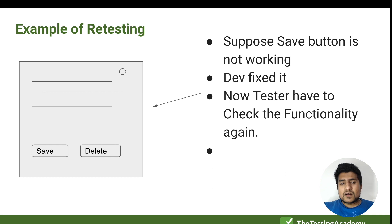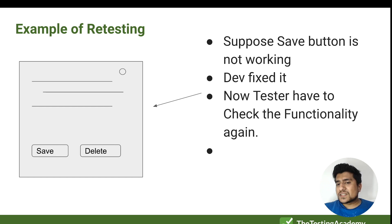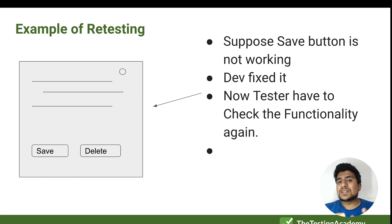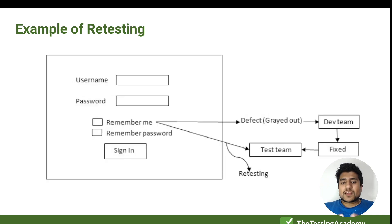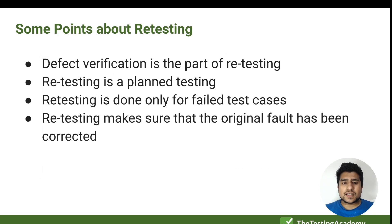Here is a simple example of retesting. Suppose you have a form with a save button and a delete button, and the save button is not working. Once it is fixed, the tester has to test only the save button functionality, not the delete button, because the bug was found in the save functionality. Similarly, a login example is a common scenario where we do retesting.